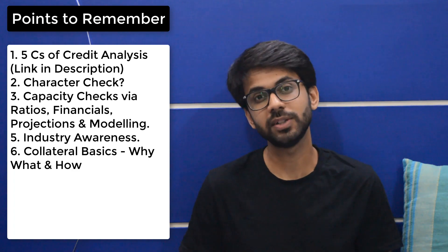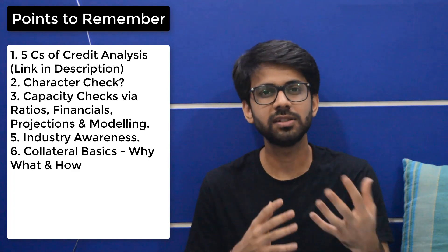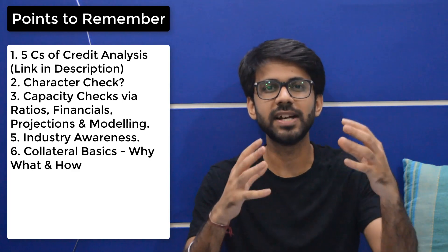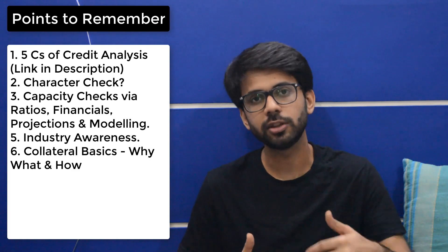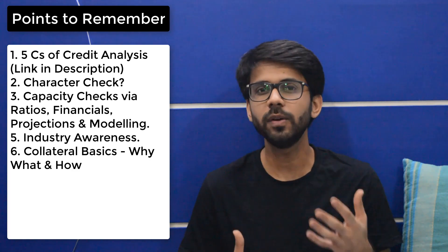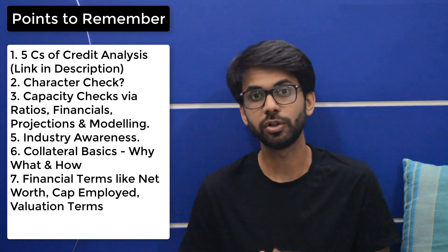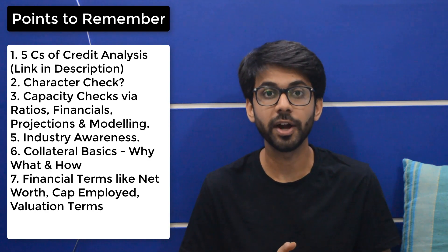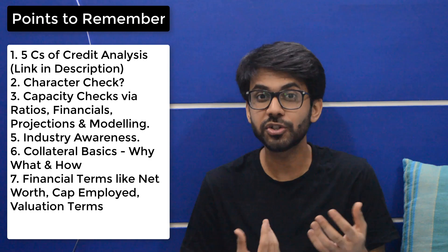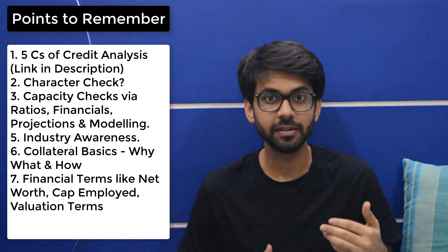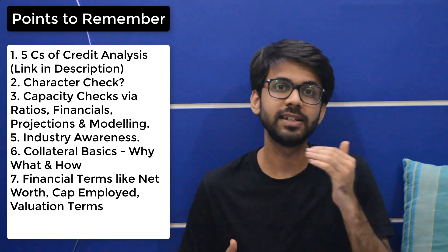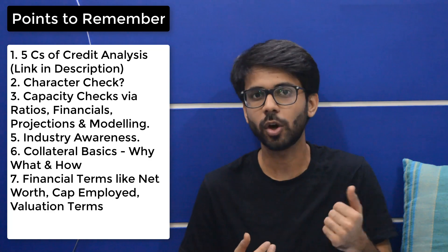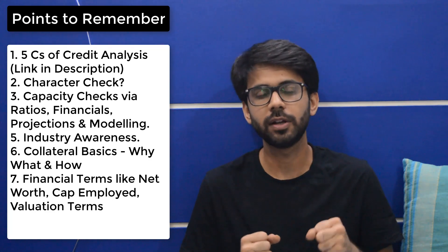The next C which comes in line is the covenants. You need to be well aware of terminologies like net worth, capital employed, cost of capital employed, return on capital employed, enterprise value, and a few valuation terms like EBITDA and EBIT. You also need to understand discounting methods and the basic ratios revolving around liquidity and solvency — these are things you need to be clear on.